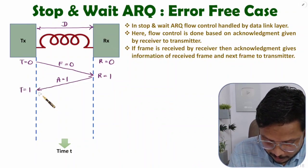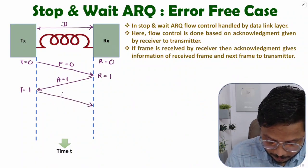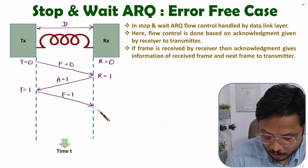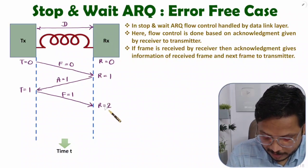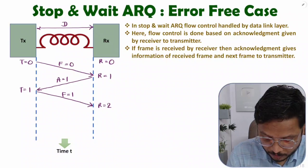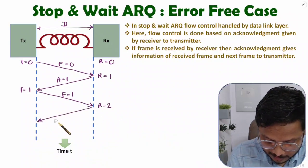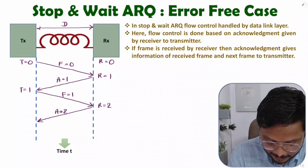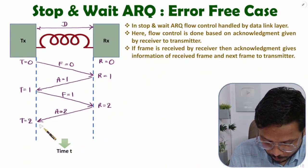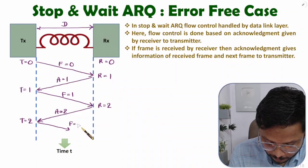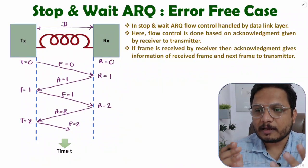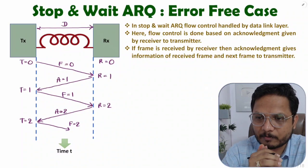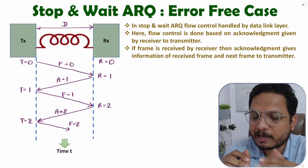The transmitter forwards frame number one. Once frame number one is received at the receiver side, the variable changes to r=2, and the receiver asks for frame number two via acknowledgement a=2. The transmitter then sends frame number two. So based on acknowledgement, frames are forwarded one by one — this is simply how stop-and-wait ARQ protocol functions.